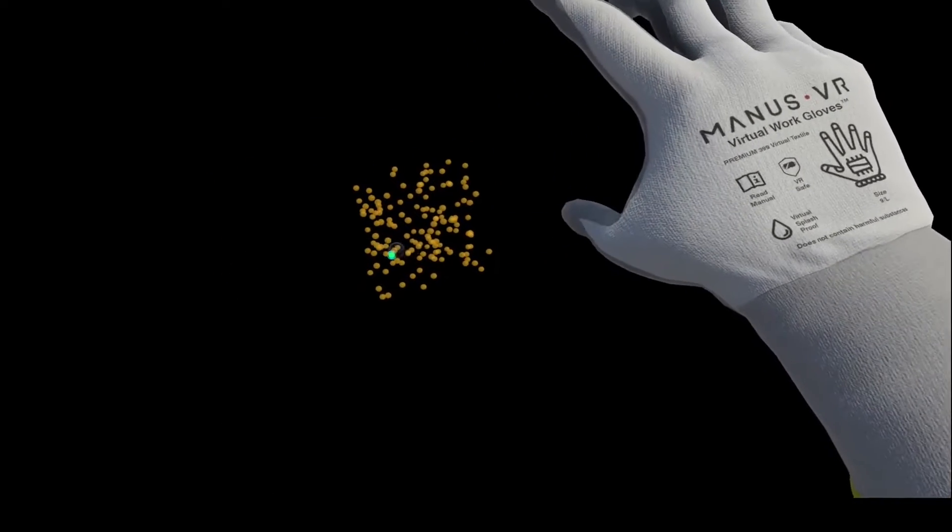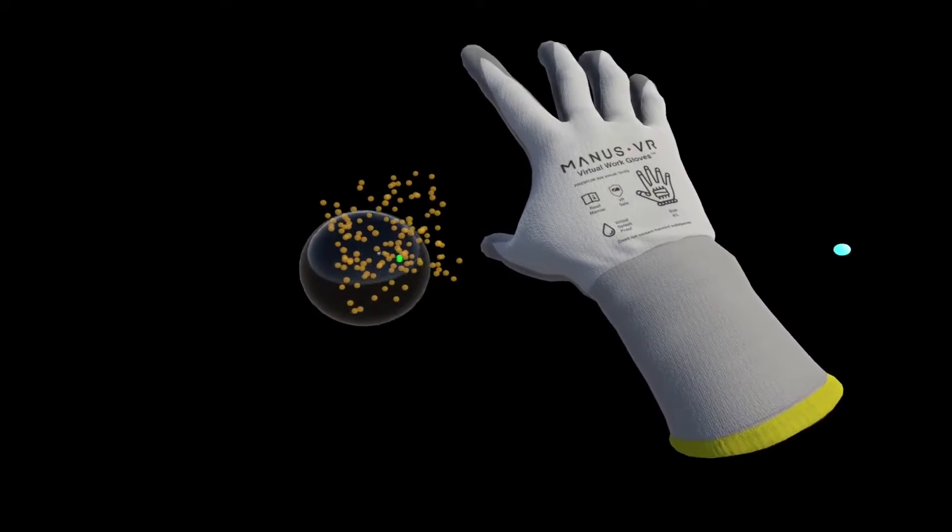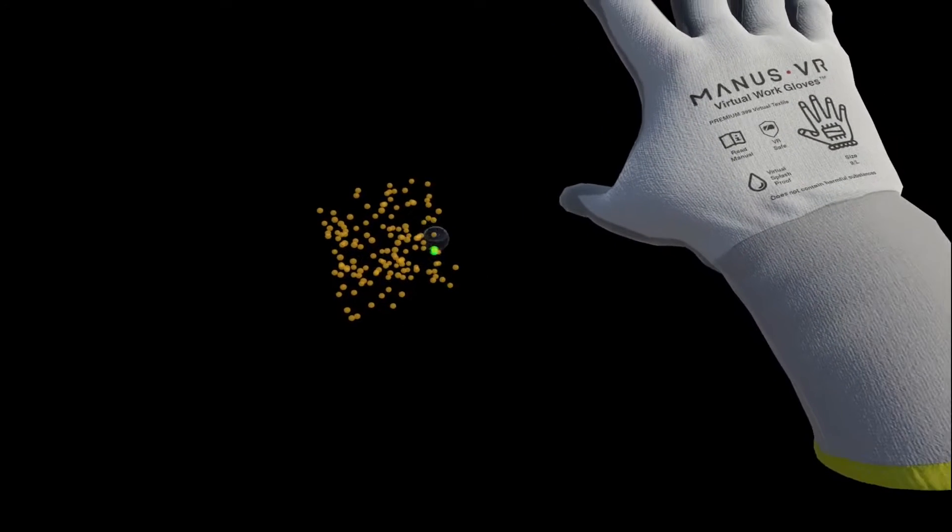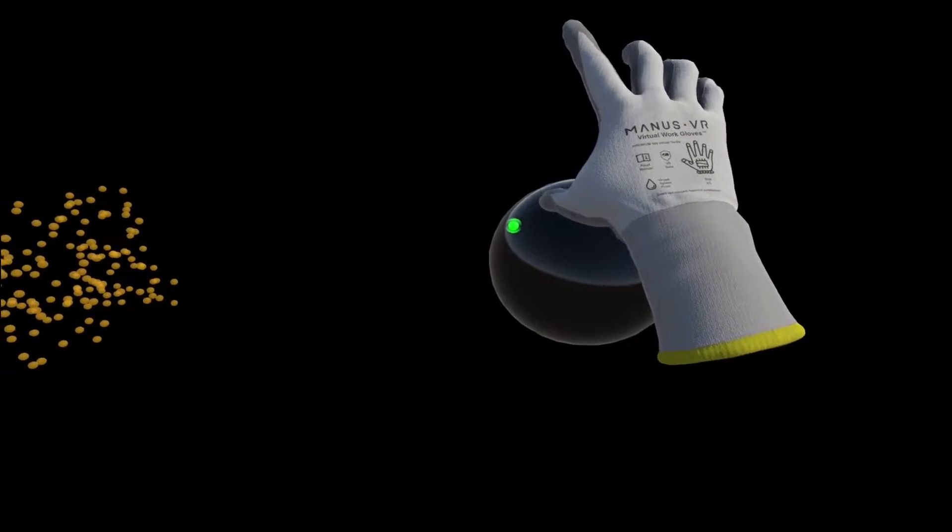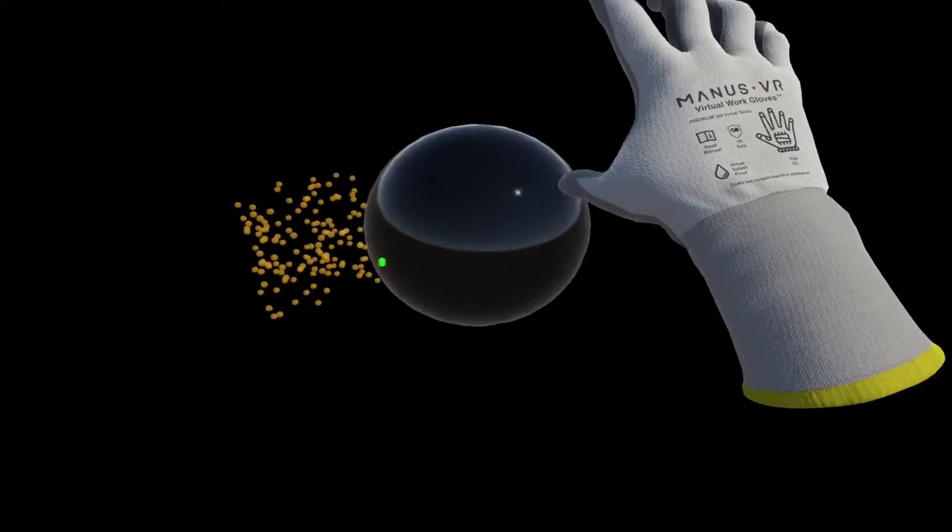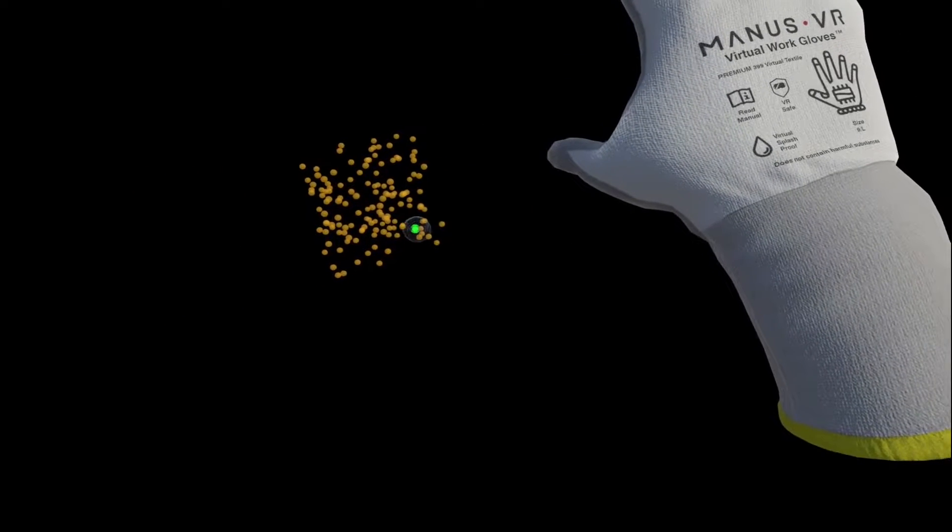The 3D Bubble Cursor is a well-known selection technique. Users control a semi-transparent bubble by mapping the hand's position to the bubble's position. It allows users to efficiently select targets by dynamically resizing the volume selection to contain the closest target.